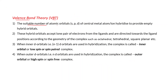In VBT, a suitable number of atomic orbitals — like s, p, d — of the central metal atom or ion hybridize to provide empty hybrid orbitals. These hybrid orbitals accept lone pairs of electrons from the ligands and are directed towards the ligand positions according to the geometry of the complex, such as octahedral, tetrahedral, square planar, etc.